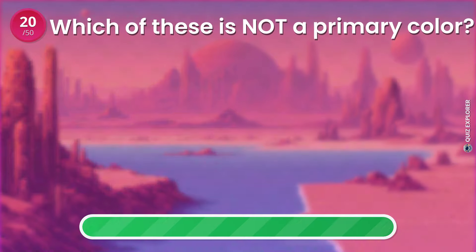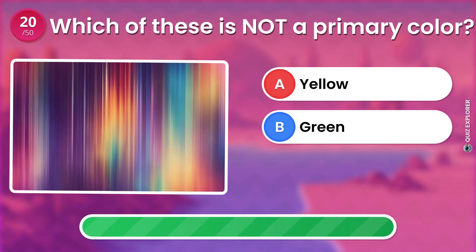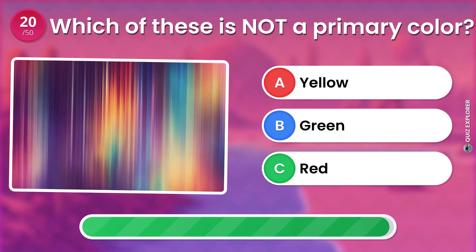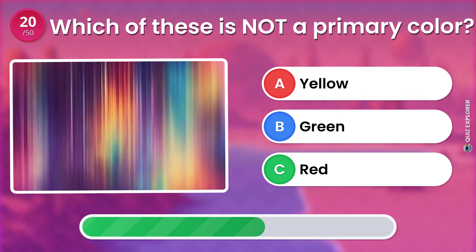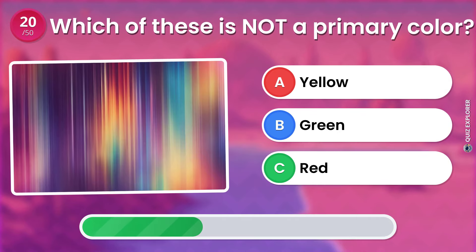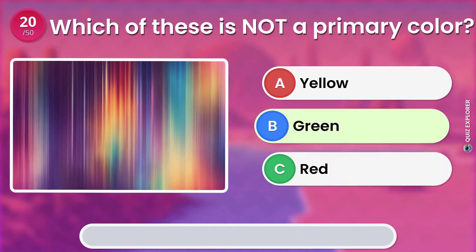Which of these is not a primary color? Yellow. Green. Red. The answer is: Green.